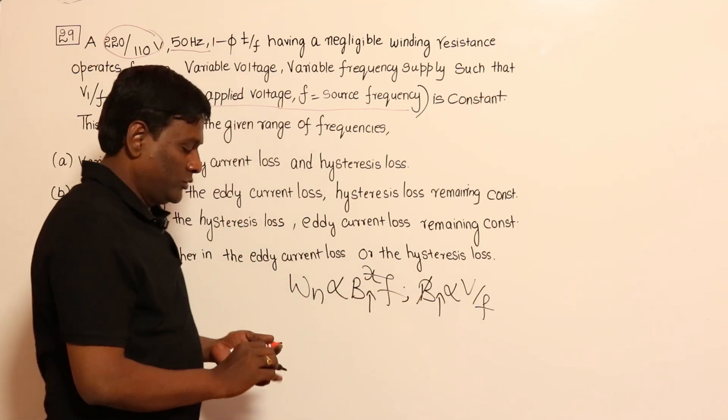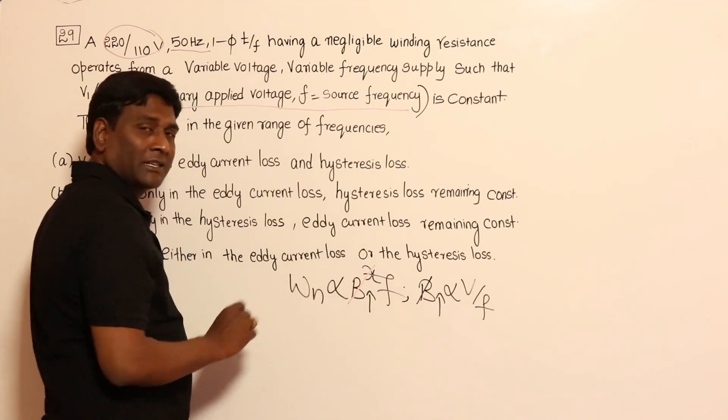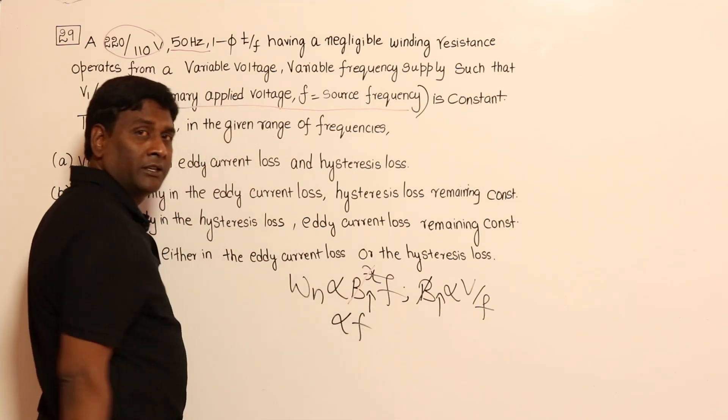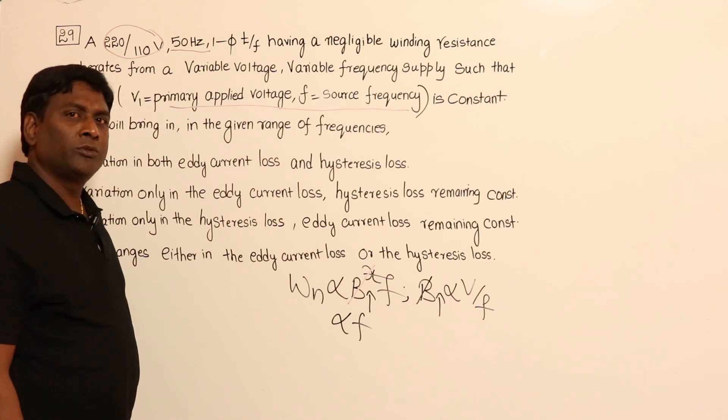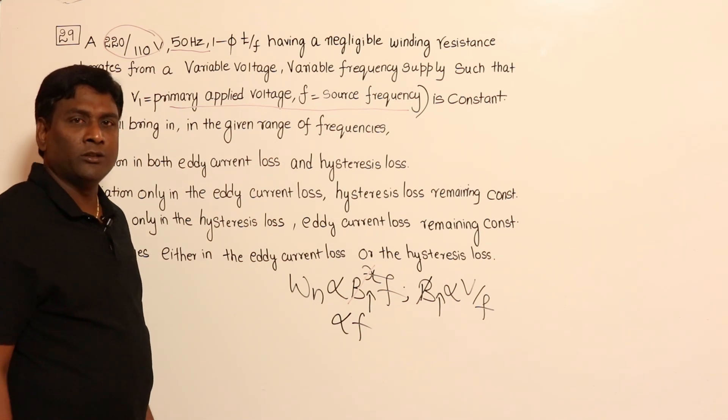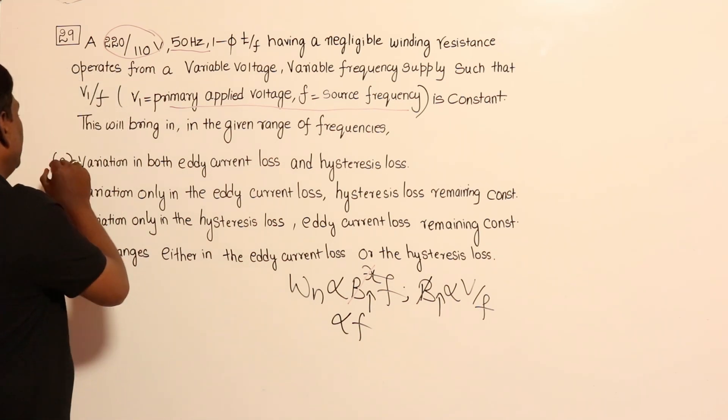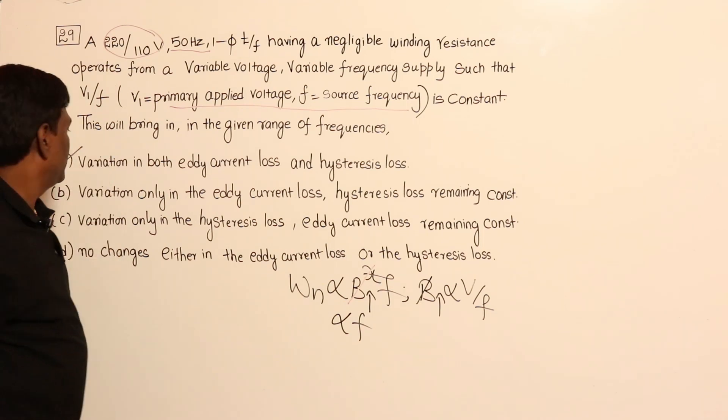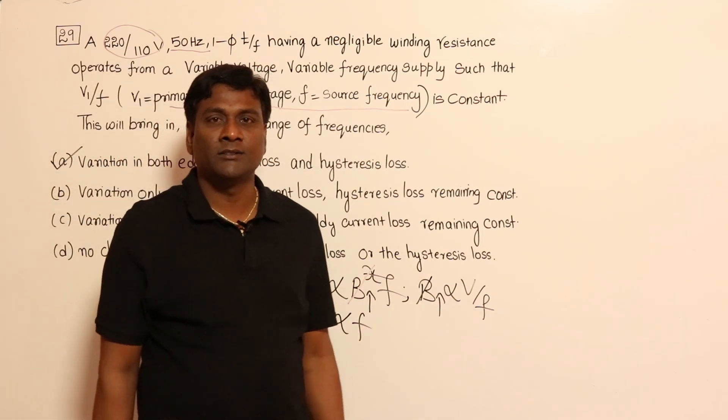If B_max is constant, hysteresis loss is directly proportional to frequency. Frequency is variable here, so automatically hysteresis losses also should vary. So the answer should be: variation will happen in both hysteresis and eddy current losses.